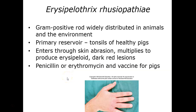Erysipelothrix is also gram-positive, distributed in many animals and the environment. The primary reservoir is the tonsils of healthy pigs. It is acquired through skin abrasions and multiplies to produce erysipeloid, acquired from infected swine. Treatment is penicillin or erythromycin, and a vaccination exists for livestock to prevent harboring the infectious agent.